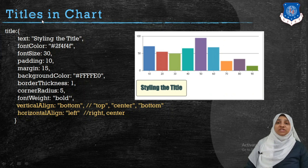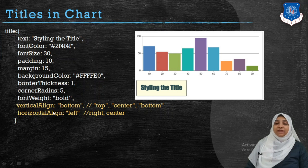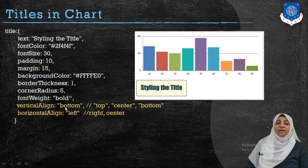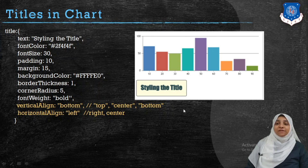To change the placement of the title — for example, from top to bottom-right — use two additional properties within title. The verticalAlign property accepts 'top', 'bottom', or 'center'. In this example, verticalAlign is set to 'bottom'. The horizontalAlign property accepts 'left', 'center', or 'right'. You can try different permutations and combinations of these values to see the difference in the resulting chart.